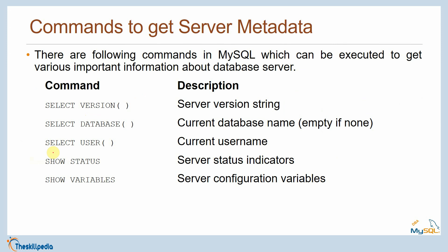Commands to get server details at the MySQL prompt: SELECT VERSION() gives the server version you are running; SELECT DATABASE() gives the current database name (empty if none is selected); SELECT USER() gives the current user name. SHOW STATUS will show you the status variables or status indicators, and SHOW VARIABLES shows server configuration variables.